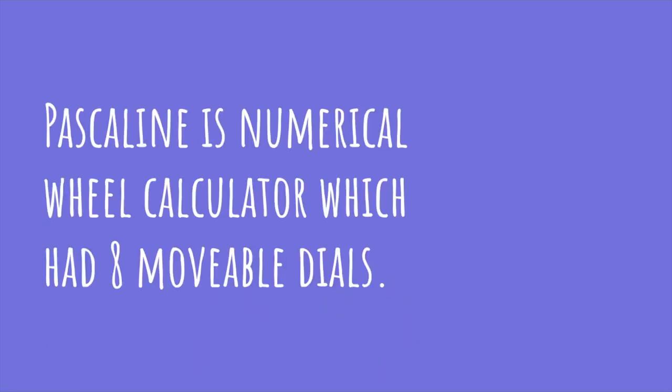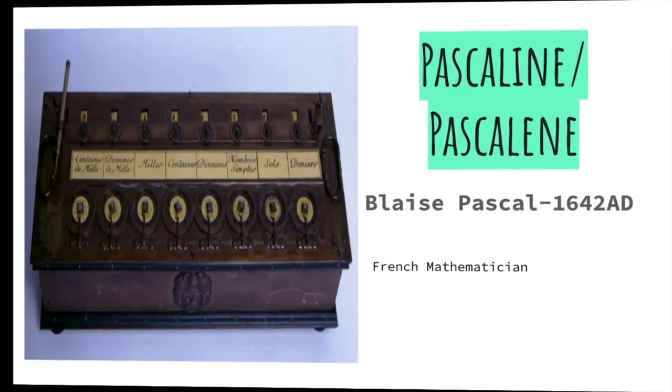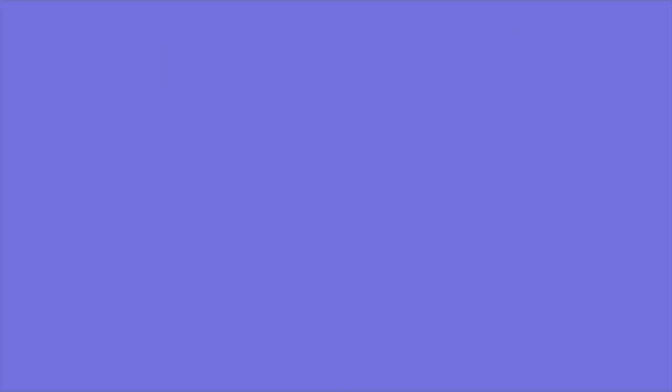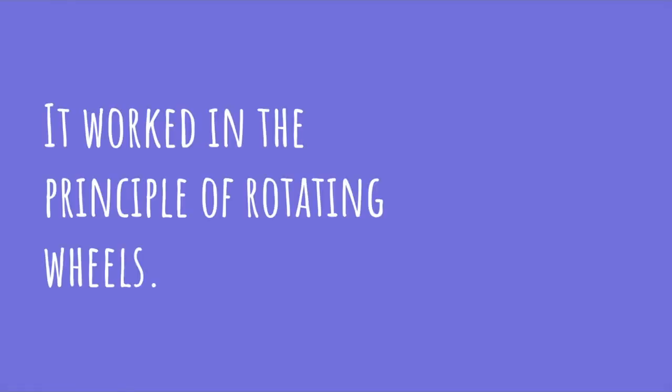Pascaline is a numerical wheel calculator which had eight movable dials. These are dials, one dial, two dial, three dial, four dial, five, six, seven, eight. This Pascaline is the first functional calculator. It worked on the principle of rotating wheels. There were wheels that could be rotated in the Pascaline.